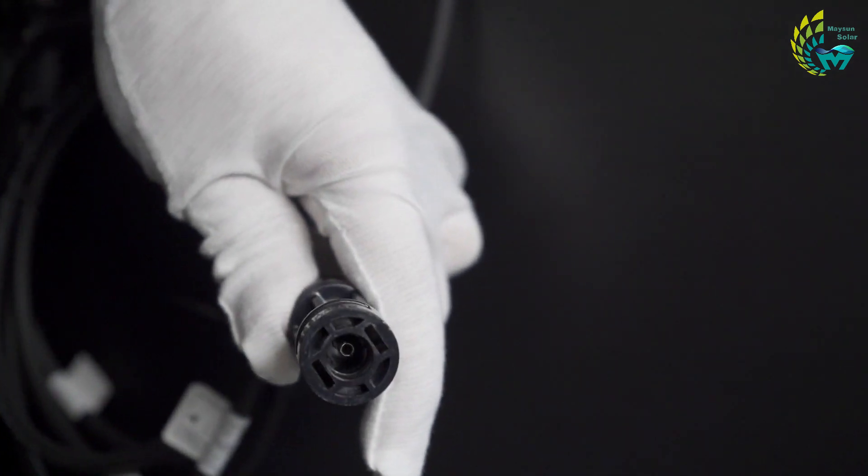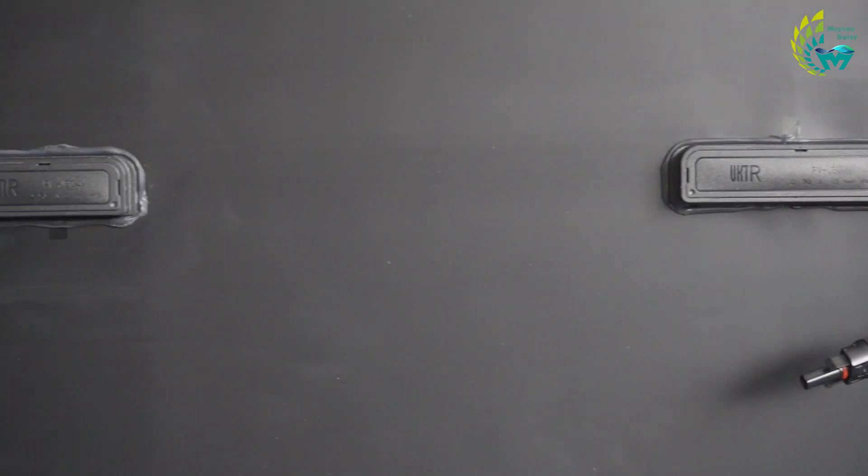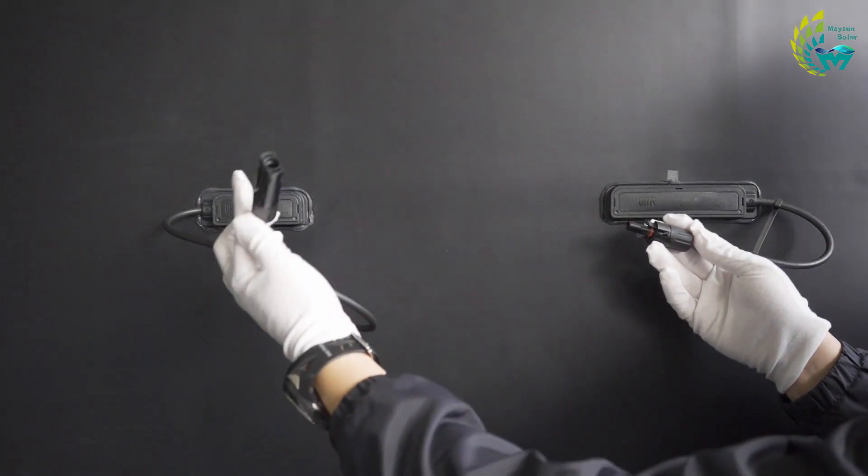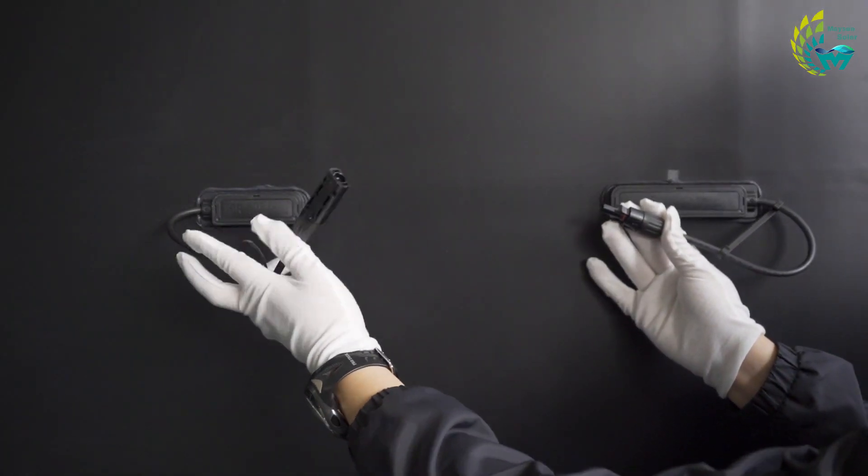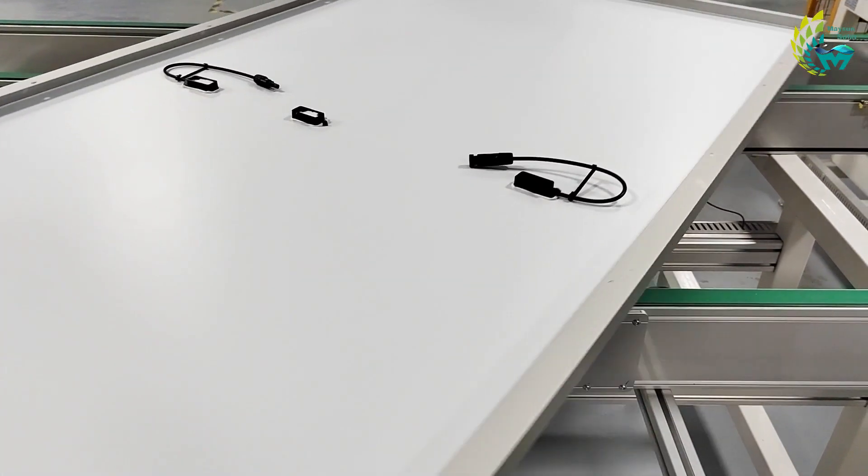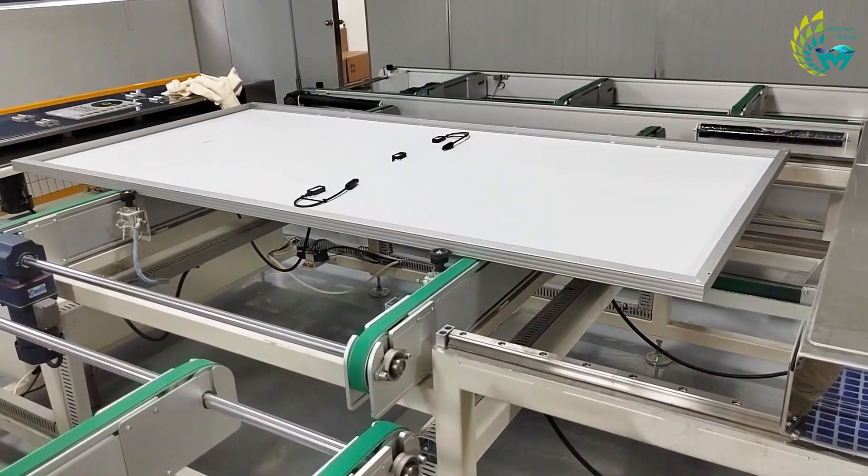Split junction boxes contain multiple junction boxes, each with a diode inside and positive and negative cables distributed over two junction boxes. Therefore, a module should have at least two junction boxes, and the current mainstream half-piece module uses a special three-part junction box.